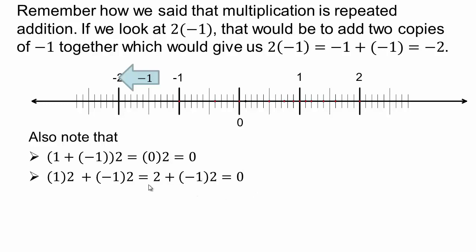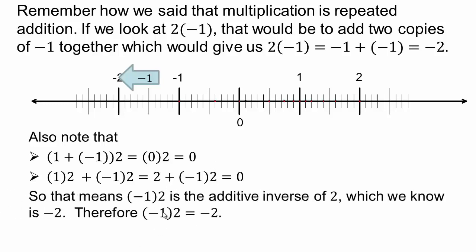We already know what the additive inverse of 2 is: negative 2. So negative 1 times 2 must be negative 2. In general, negative 1 times a is the additive inverse of a, which is negative a. Similarly, a times negative 1 is also the additive inverse of a, or negative a. So multiplying by negative 1 always gives us the additive inverse.